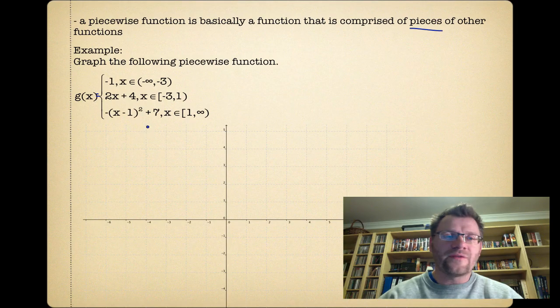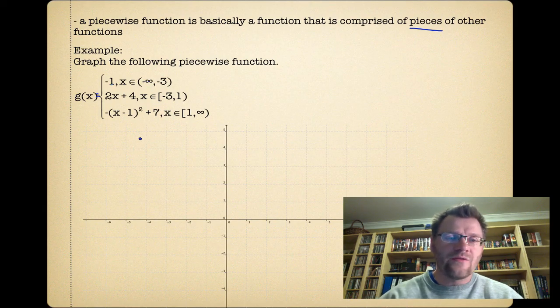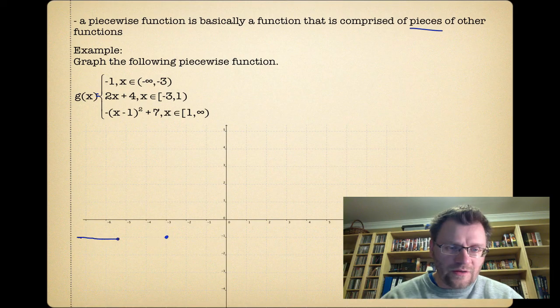So if we're going to graph this thing, we just have to do it piece by piece. So we're saying that g(x), which is the height of the graph, is negative one, and that's from negative infinity to negative three. So everything from negative infinity to negative three, that has a height of negative one.